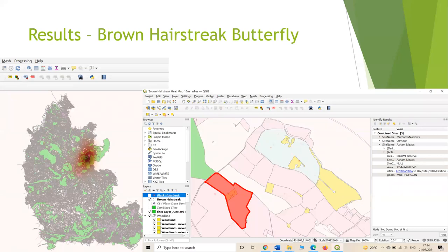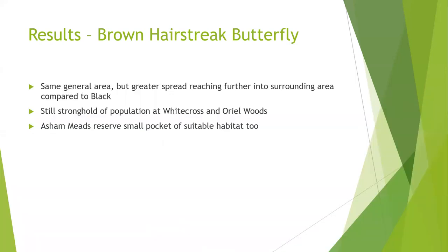On screen now are the heat maps for the brown hairstreak butterfly. There's a localisation in the north-east of Oxfordshire, also extending into the Murcott Meadows and Asher Meads. It's the same general area but with a greater spread, reaching further into the surrounding area for the brown compared to the black. There's still a stronghold of the population at White Cross and Oriel Woods, but also extending to Asher Meads Reserve, indicating a small pocket of suitable habitat supporting a stronghold population within there too.